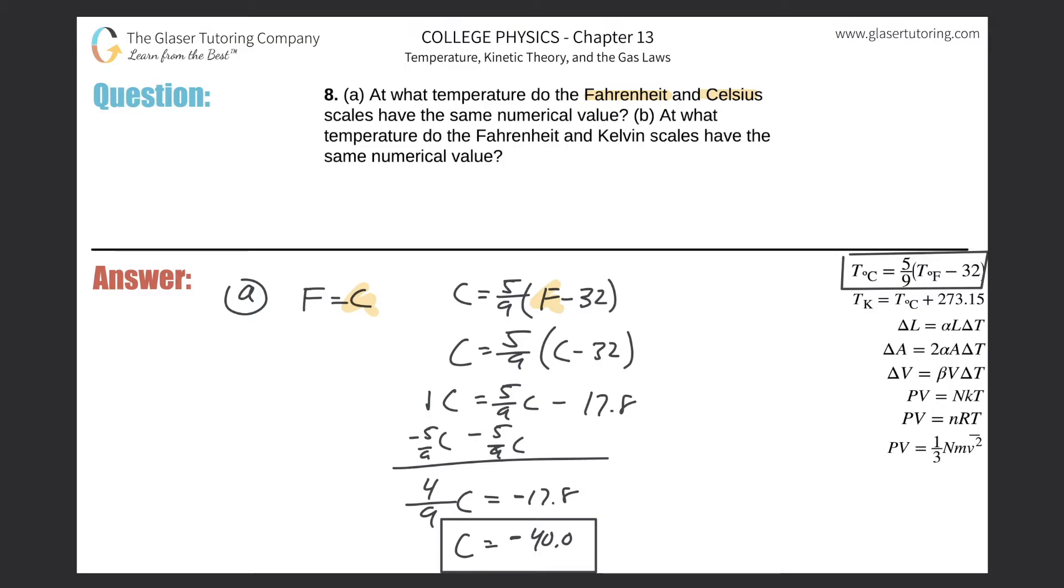And you can go back and kind of show that to yourself. Plug in negative 40 here for F and see what you get. So negative 40 minus 32, multiply it by five ninths. And look at what we have there. We have the same thing, negative 40. Alright? So that would be the answer for letter A.